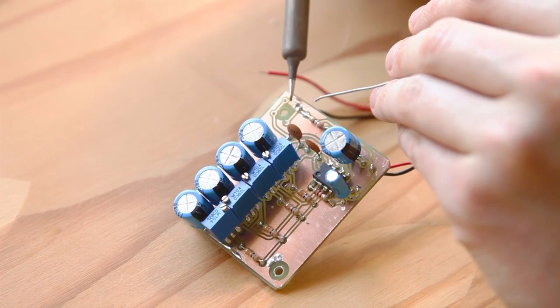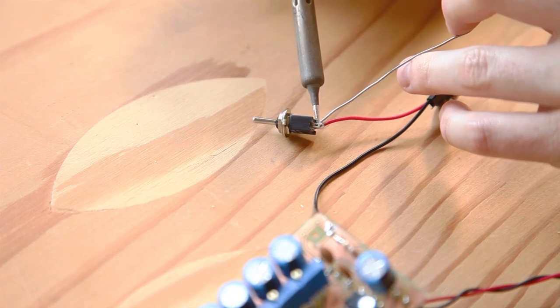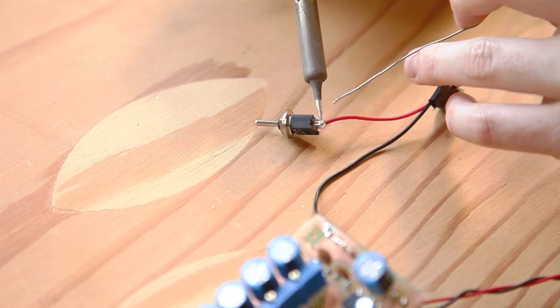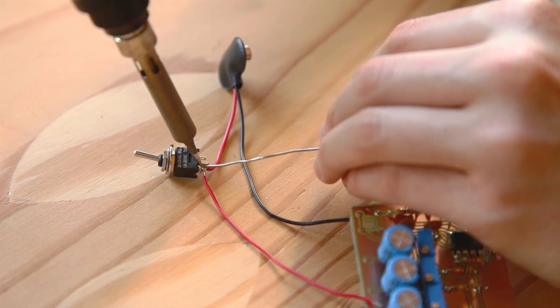Take the 9 volt battery clip and solder the black to the ground on the amp board. Solder the red to the middle pole on your single pole double throw switch, commonly referred to by its acronym SPDT.